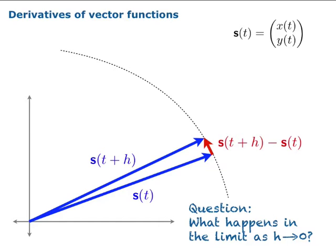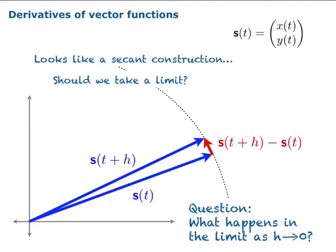Let's brainstorm a little bit. What do we notice? It looks familiar to us. It looks like the secant construction when we took derivatives. That leads us to a question: Should we take a limit somehow? Is there a way to take a limit of this process? And is there a derivative lurking about?